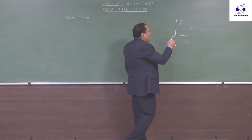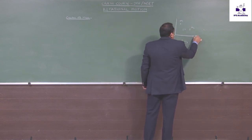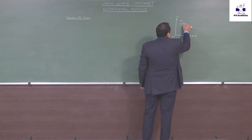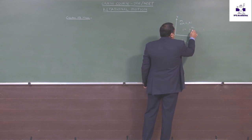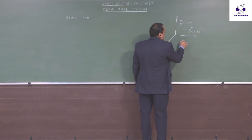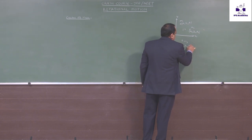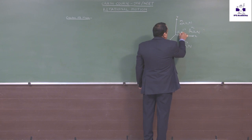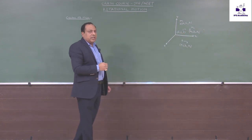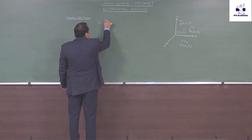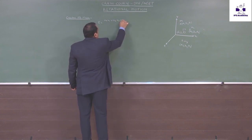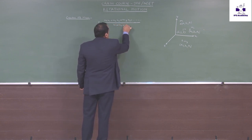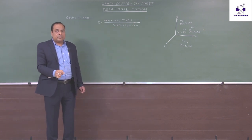Center of mass would be somewhere where I can assume the entire mass m1 plus m2 plus m3 is concentrated. In terms of the coordinate system x, y, and z: these masses are placed at coordinates x1, y1, z1; m2 is at x2, y2, z2; and m3 is at x3, y3, z3. The coordinates of the center of mass are x-bar, y-bar, z-bar. The formula is: x-bar = (m1·x1 + m2·x2 + m3·x3 + ...) / (m1 + m2 + m3 + ...).